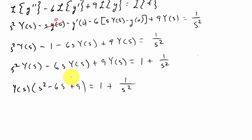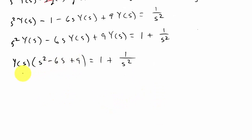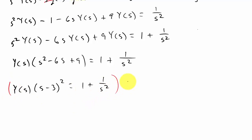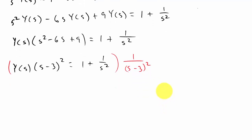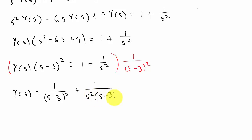Now, s² minus 6s + 9 factors into (s minus 3)², so (s minus 3)² equals 1 plus 1 over s². Now I'm going to multiply everything by 1 over (s minus 3)², which leaves me with Y(s) equals 1 over (s minus 3)² plus 1 over s²(s minus 3)².